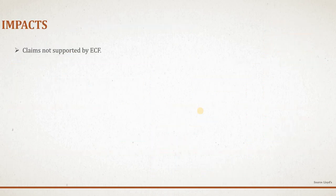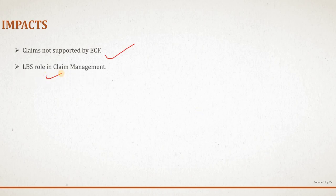Now let's talk about the various Brexit impact areas. For claims not supported by ECF — in other words, for classes of business where ECF cannot be used — the usual process of paper and email submission to the XCS LBS will be followed, with no change. Regarding LBS's role in claim management, the Brussels subsidiary will maintain an appropriate level of oversight of the claim function, as defined in the outsourcing arrangement. The Brussels subsidiary will perform automated checking of claim information based on the SCM, and if any issues are identified, a query will be raised with the lead managing agent to resolve it.